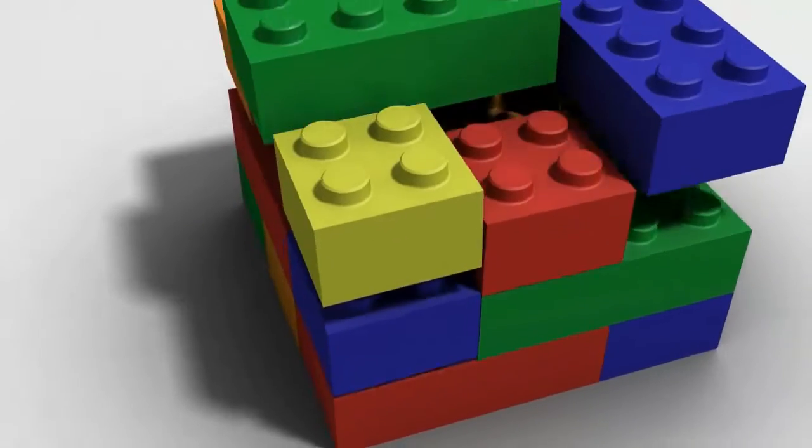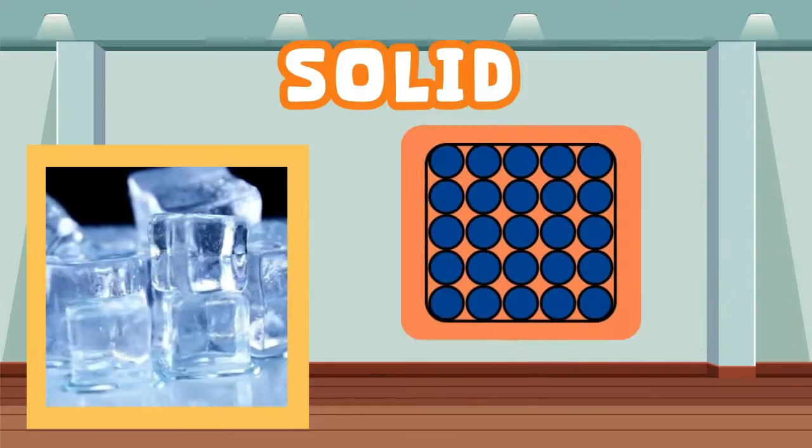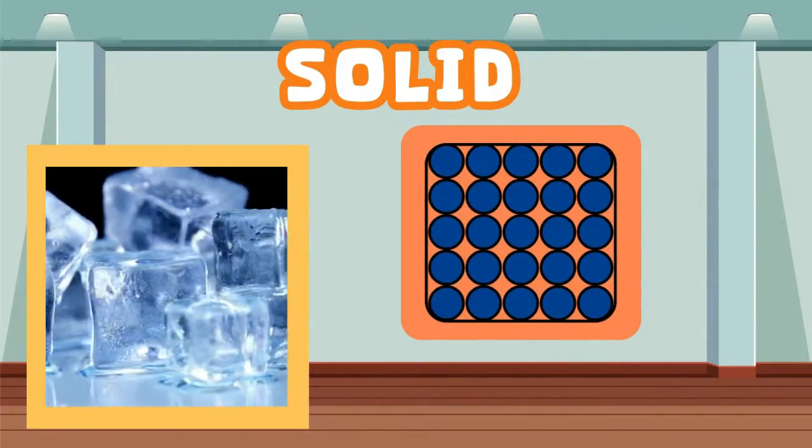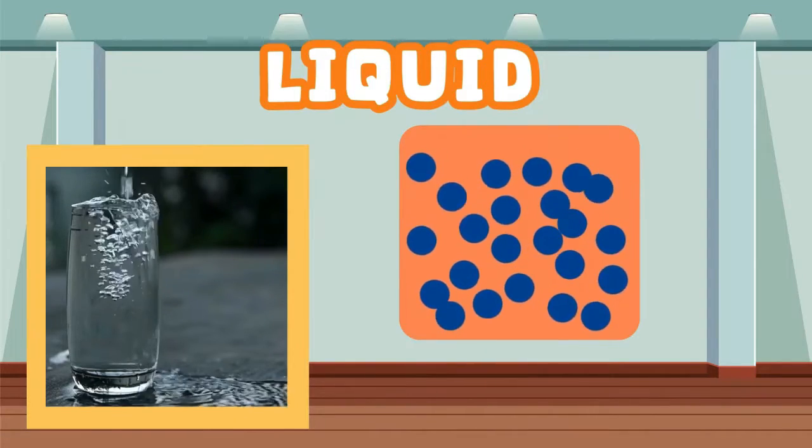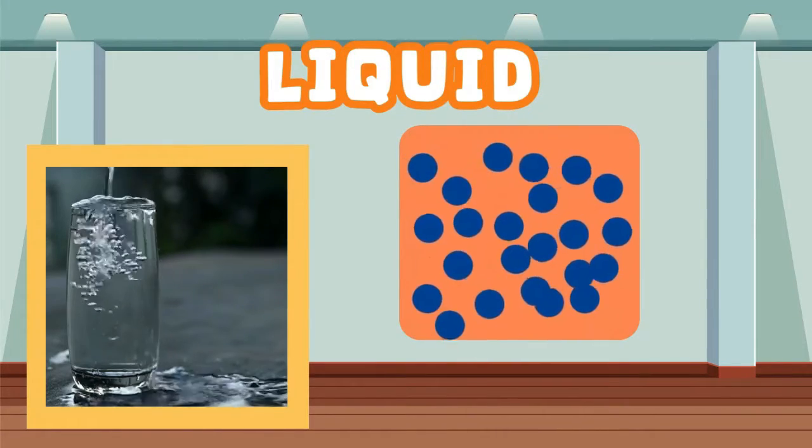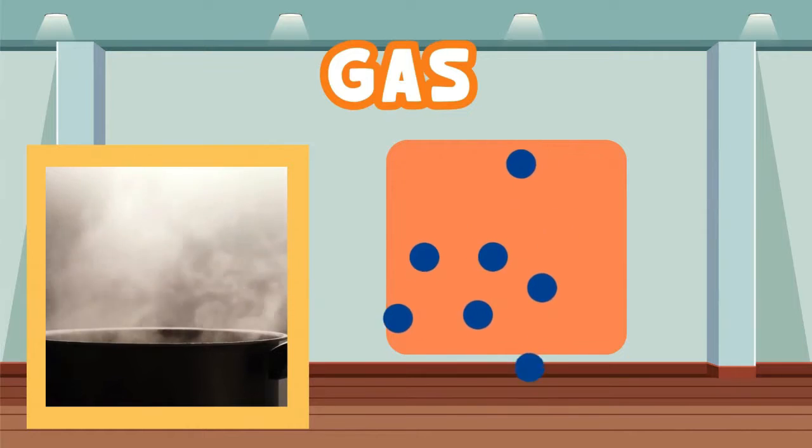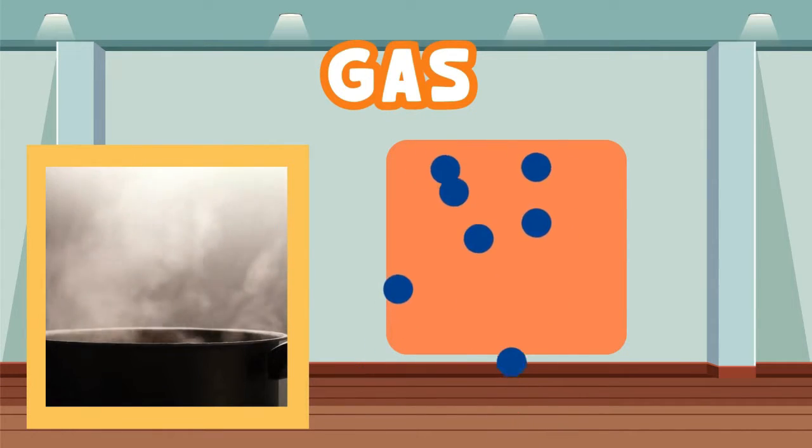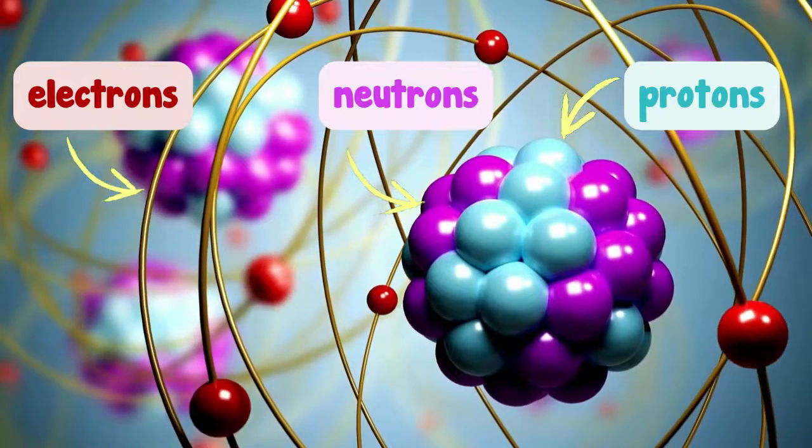The atoms in a solid are tightly packed and don't move. The atoms in liquids are still connected to each other, but not as tightly as in solids. The atoms in gas are not held together at all, so they can move about freely. This is important information.